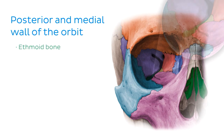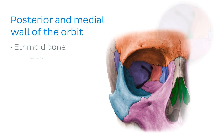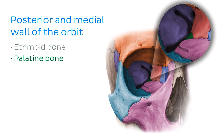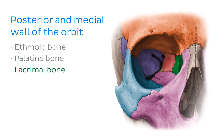Next up was the ethmoid bone, another centrally located bone which contributes to both the left and right orbits via its orbital plates found on the lateral surfaces of the bone. We finished up with two smaller bones: the palatine bone, a paired bilateral bone whose orbital processes contribute to a small portion of the posterior orbital wall, and finally the lacrimal bone, another bilateral bone largely defined by the posterior lacrimal crest on its anterior surface.